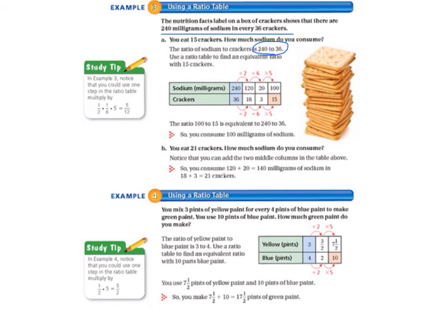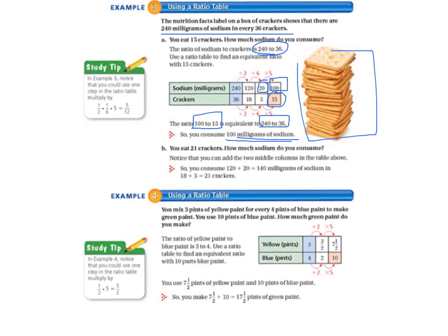So we have 120 milligrams in our second column and 18 crackers. Then we divide by 6, giving us 20 milligrams of sodium and 3 crackers. That's not enough crackers, but we can multiply 3 by 5 to get 15 crackers. Then we take 20 and multiply by 5, giving us 100 milligrams of sodium. The ratio 100 to 15 is equivalent to 240 to 36, so we consume 100 milligrams of sodium with our snack of 15 crackers.